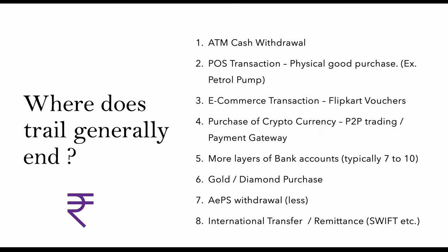Where does the trail end? As shown in the example, the money moves through first and second layer bank accounts. Criminals take out the money through cash at ATMs, swipe cards from fraud accounts to purchase petrol or other products, or buy through online channels like gift card vouchers. They also trade on cryptocurrency via P2P trading, convert into crypto, and create more layers — seven to ten layers — which can take around one month to trace.